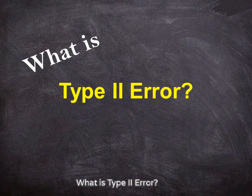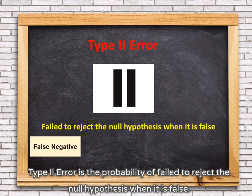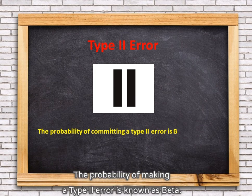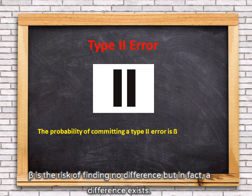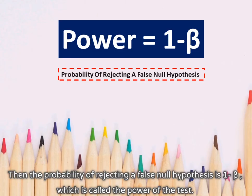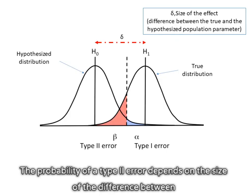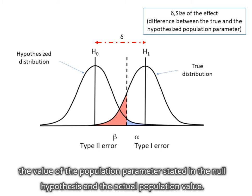What is type 2 error? Type 2 error is the probability of failing to reject the null hypothesis when it is false. The probability of making a type 2 error is known as beta. Beta is the risk of finding no difference but in fact a difference exists. The probability of rejecting a false null hypothesis is 1 minus beta, which is called the power of the test. The probability of a type 2 error depends on the size of the difference between the value of the population parameter stated in the null hypothesis and the actual population value.